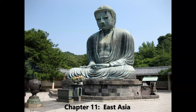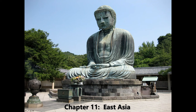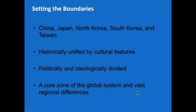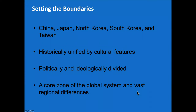This is the Buddha — from a Japanese temple. Depending on where in Asia you are, the Buddha will look different: fatter, skinnier, taller, shorter, depending on whatever the host culture is, but it's still the Buddha. This is the beautiful temple in Kamakura, Japan. China and Japan are historically the two dominant countries, with North Korea, South Korea, and Taiwan also key. The region is historically unified by religion and shared symbology in languages, yet politically and ideologically divided.